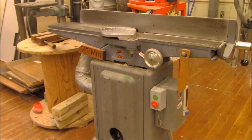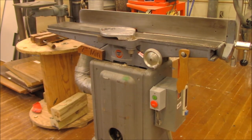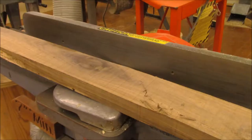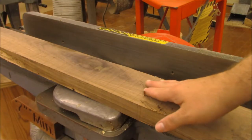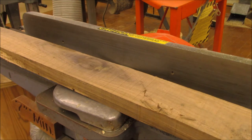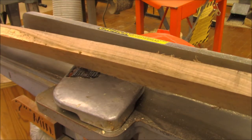Welcome to the jointer safety video. Today we're using the Morrisville High School Delta 6-inch jointer. We can use this machine to smooth out warps in the faces or to straighten an edge.